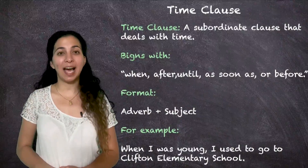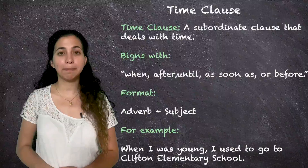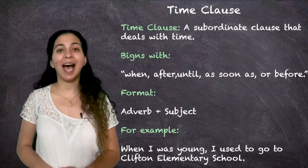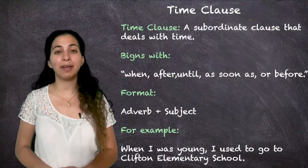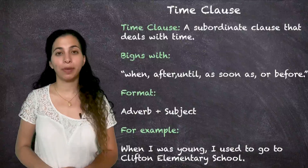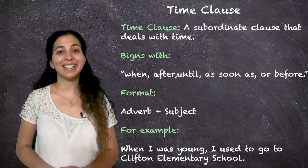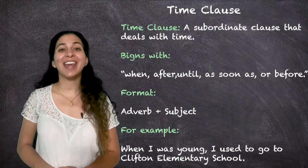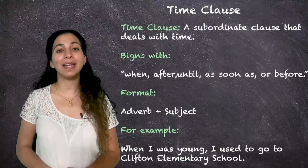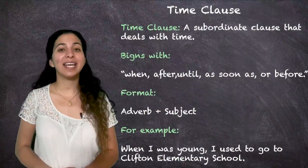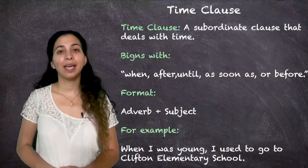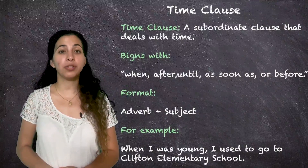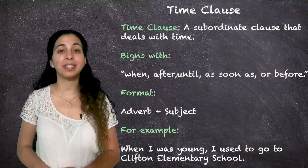Our format is adverb plus subject. For example, when I was young, I used to go to Clifton Elementary School. "When I was young" is the time clause — it shows something that happened at a certain time. In this case, going to Clifton Elementary School happened when the speaker was young.